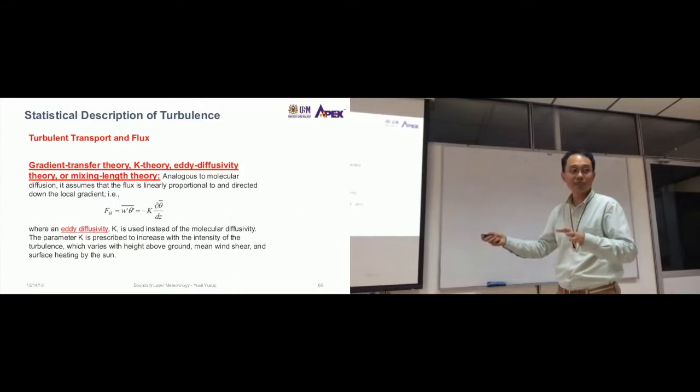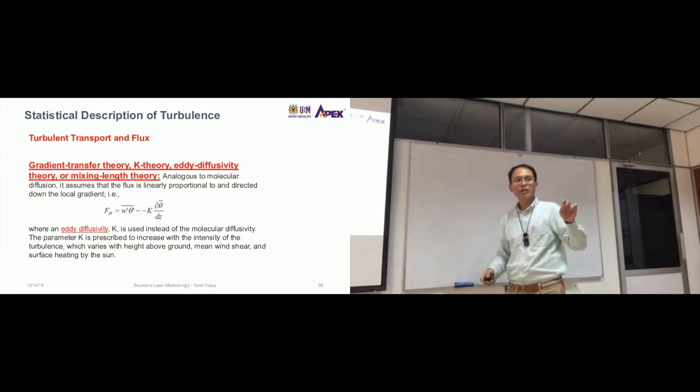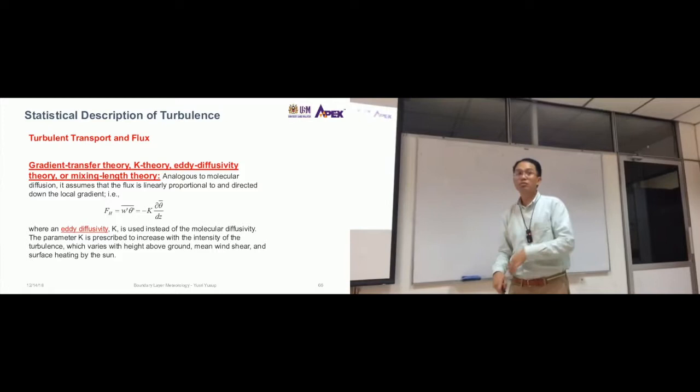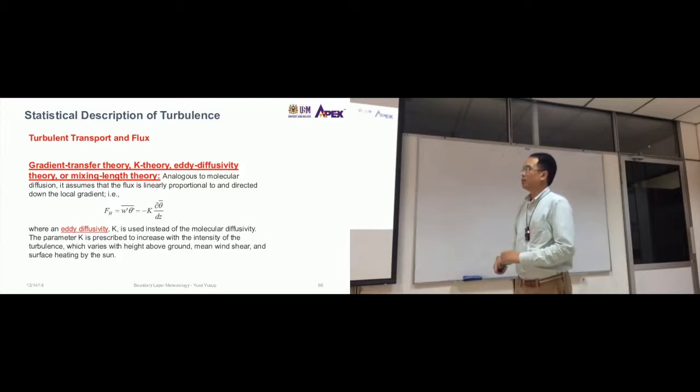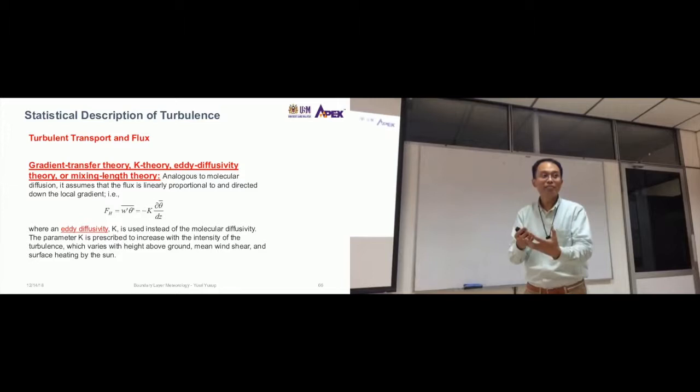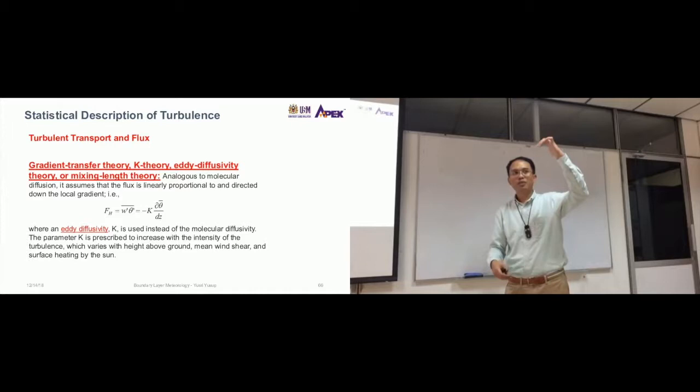We can calculate heat flux two ways, right? One is by using the eddy covariance method, which is a direct method to calculate flux, and the other way is through approximation. And that approximation uses this relation. For eddy covariance, you would need to have the fast response sensors, the sonic anemometers, the gas analyzers at 10 hertz. But if you don't have that, if you still want to calculate flux, you can approximate it by having two levels of measurements.